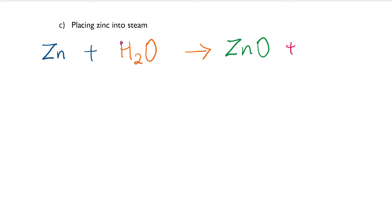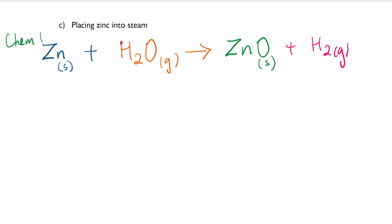Is this equation balanced? Yes — everything is balanced. Now add back the physical states: zinc is a metal, so solid. Be careful — this is not liquid water, this is steam, so it's a gas. Zinc oxide is also a solid. And hydrogen gas is a gas. So this is the chemical equation.